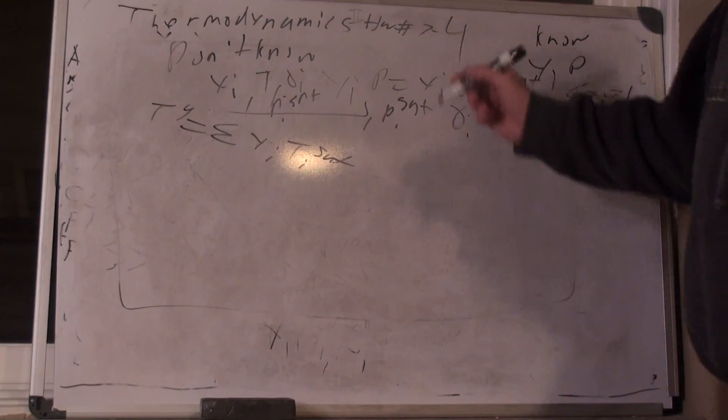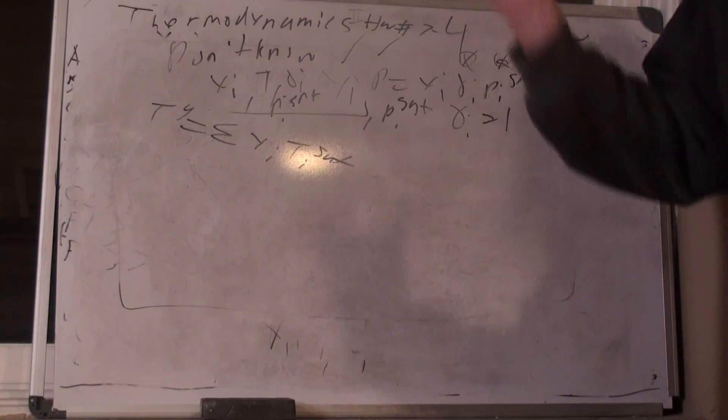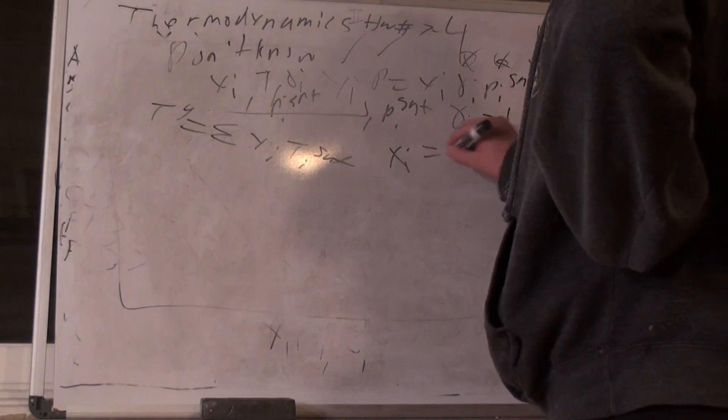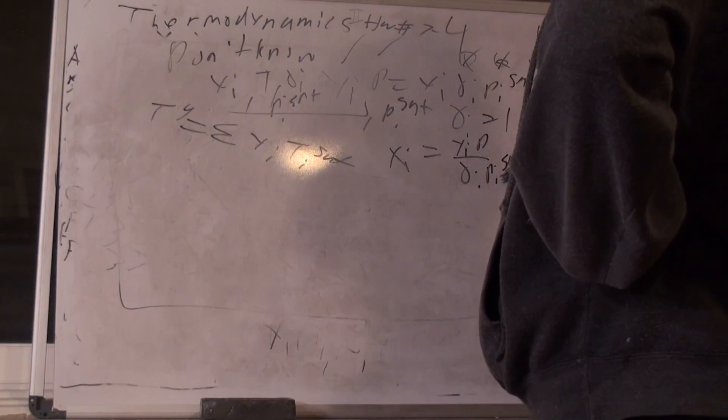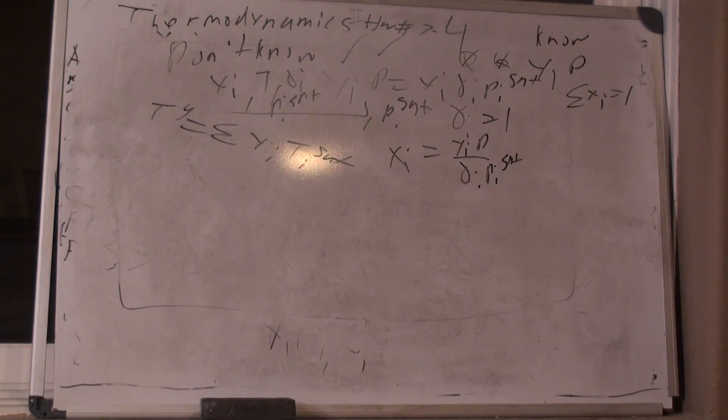So I can get my pi sat, but I can't get my gamma. So I got to assume gamma i equals one. So if I look at this one, I know this one, I know this one. I have a value for that guy. I have a value for that guy. What am I missing? I'm missing xi. And so if I solve for xi, it says yi P over gamma i pi sat. So I could get xi's right now. But rather, when just like I did with the bubble temperature, I'm going to have a weighting factor.